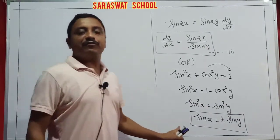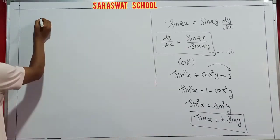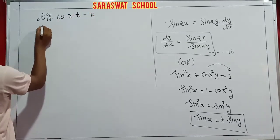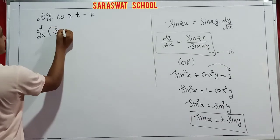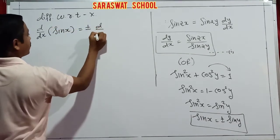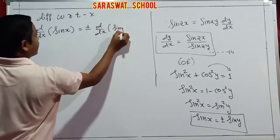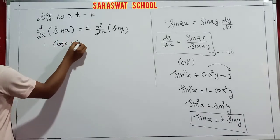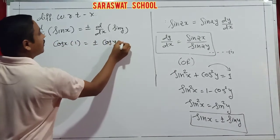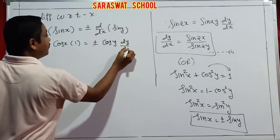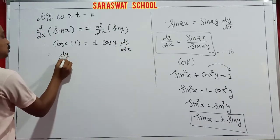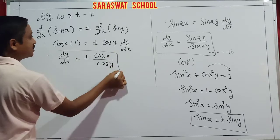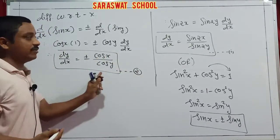Applying differentiation with respect to x: d/dx of sin x and d/dx of sin y. The derivative of sin x is cos x, x derivative is 1. The derivative of sin y is cos y, and the y derivative is dy/dx. So your answer is totally different: dy/dx = ±cos x / cos y. That is the second equation — same question, different answer.